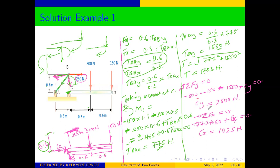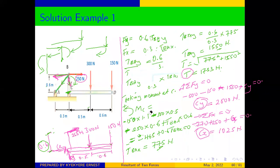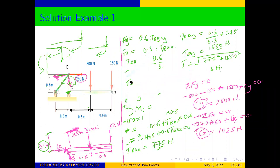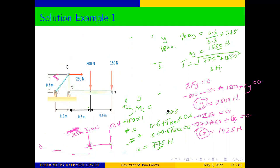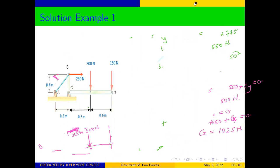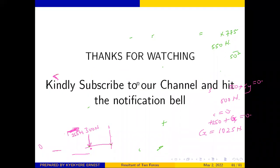We have determined the reactions at C, which are CY and CX. We have also been able to determine the tension in the rope, and we have been able to solve the question. If you have any question, any contribution or any suggestion, you can let us know at the comment section. Once again, we are grateful to you for being with us on this channel and learning basic mechanics together. We will be happy to see you once again in our next video. Thank you for watching. Kindly subscribe to our channel and hit the notification bell. Have a blessed day.